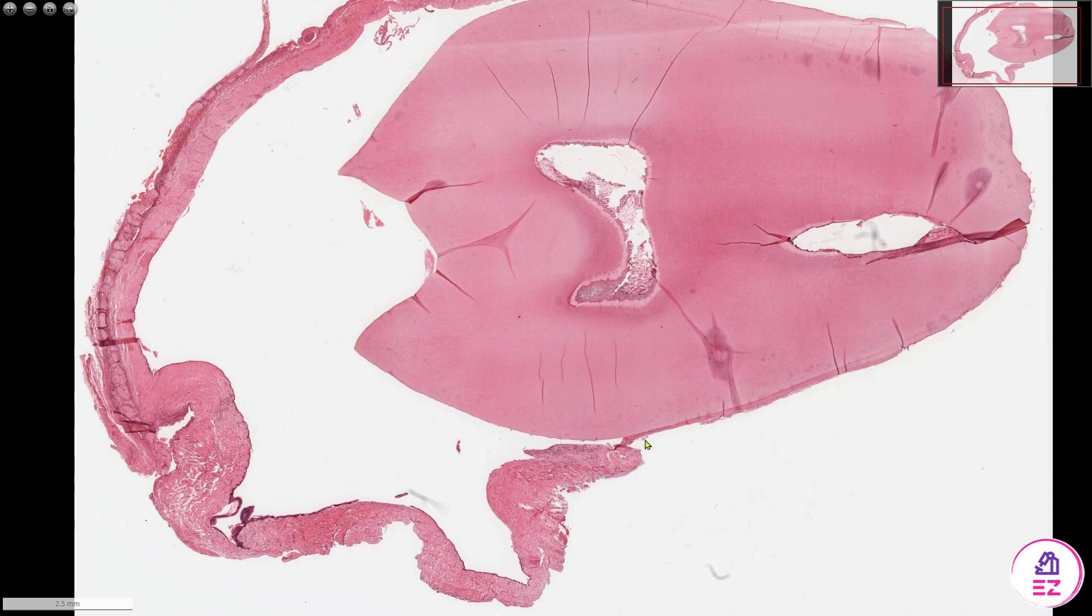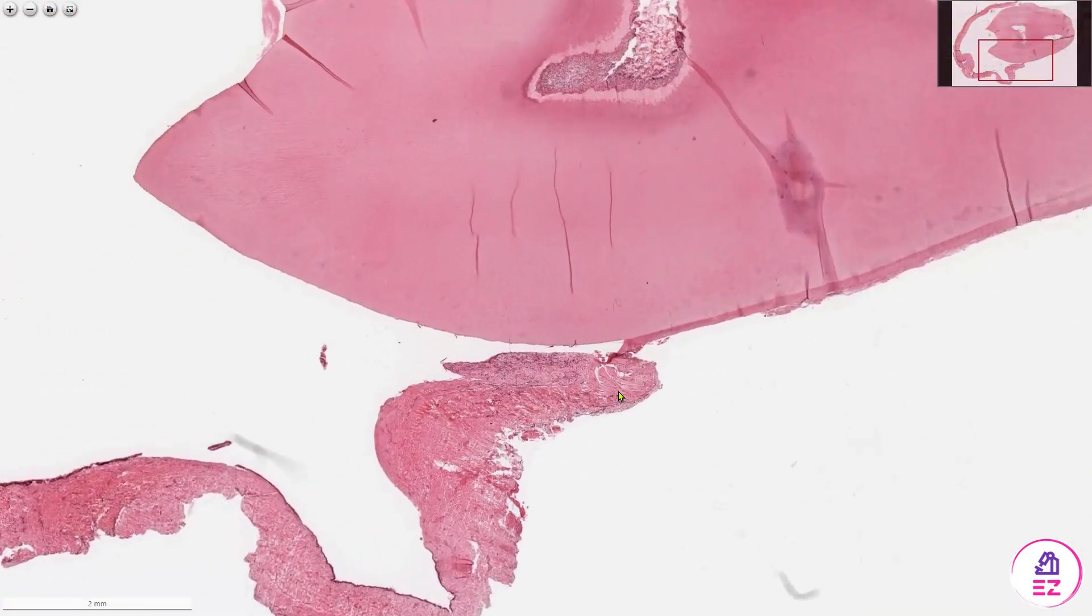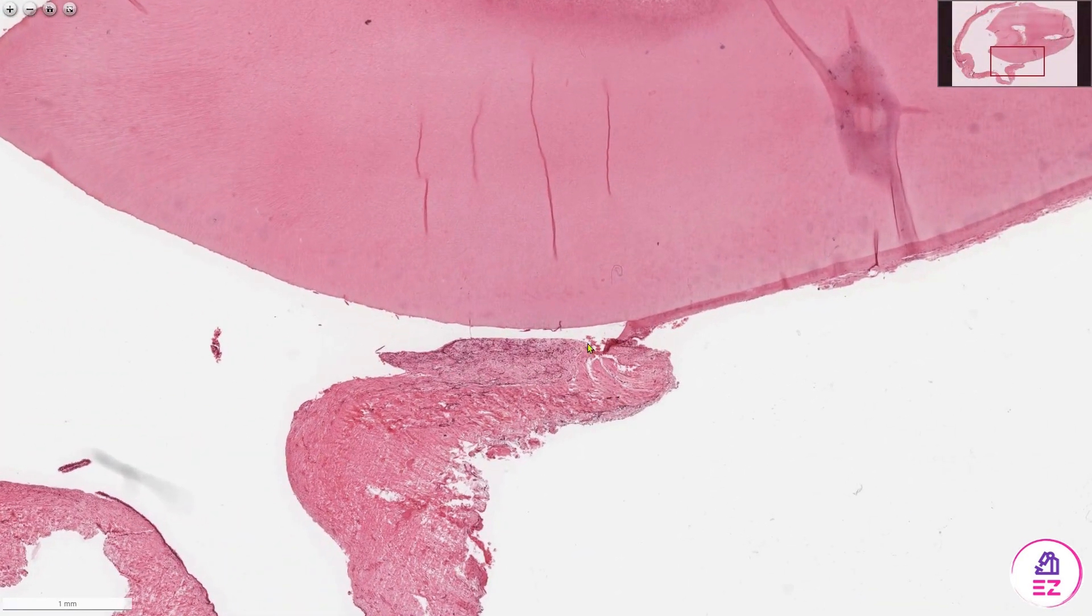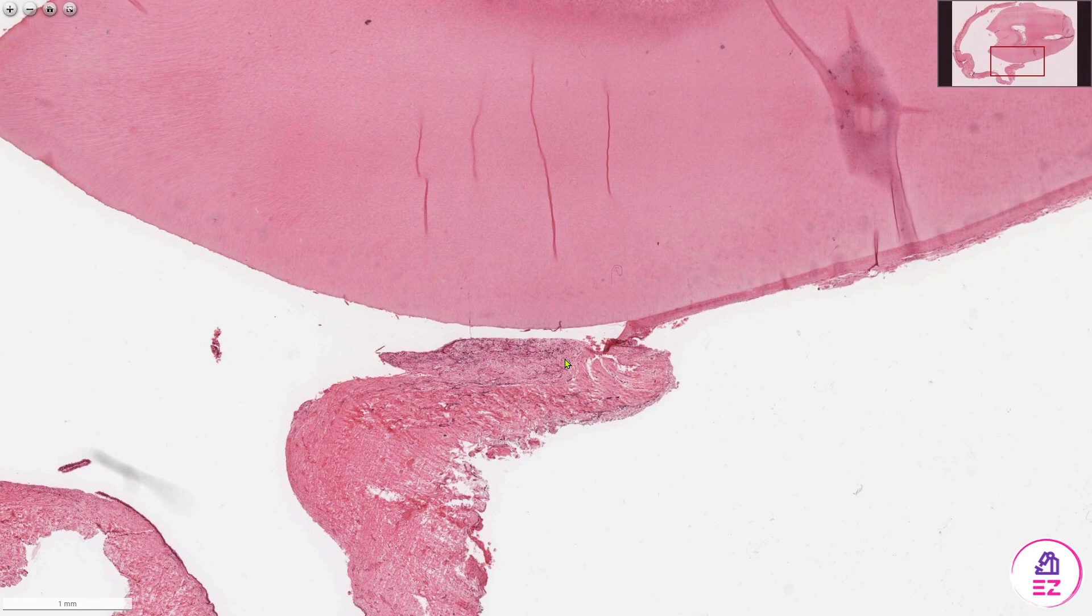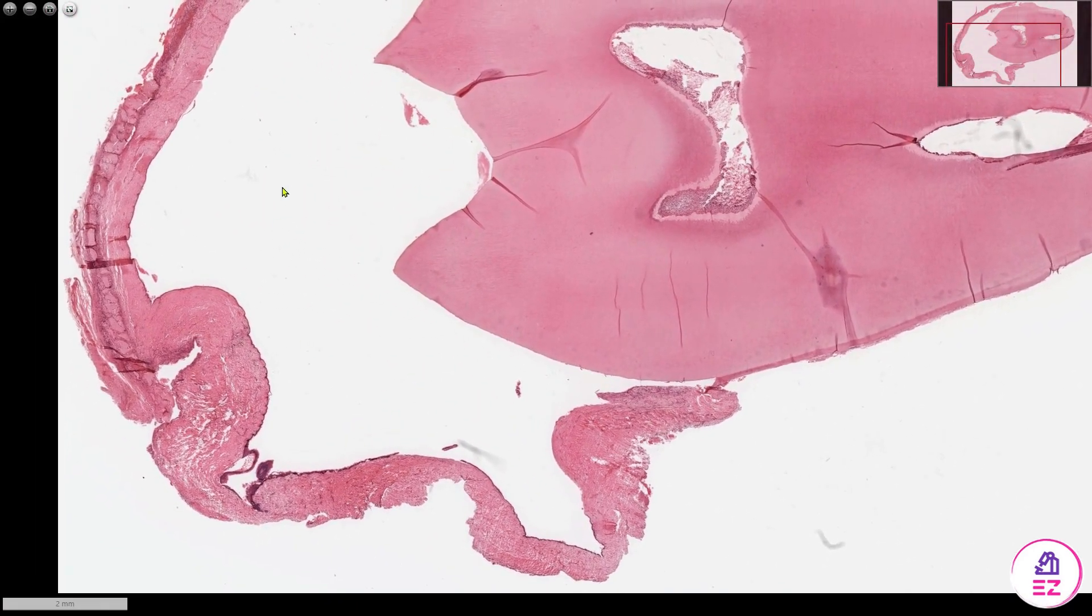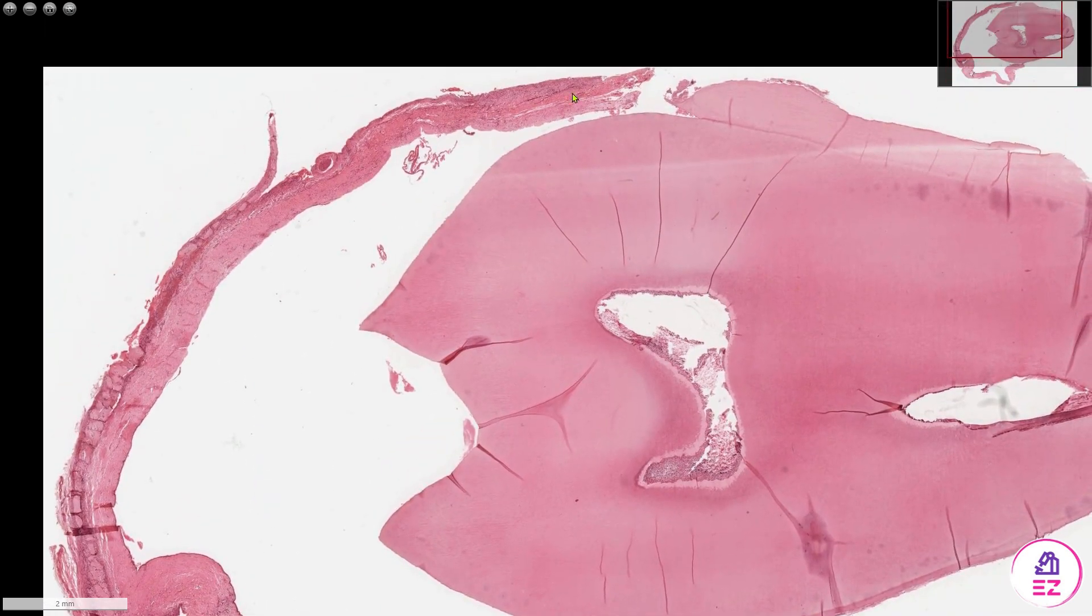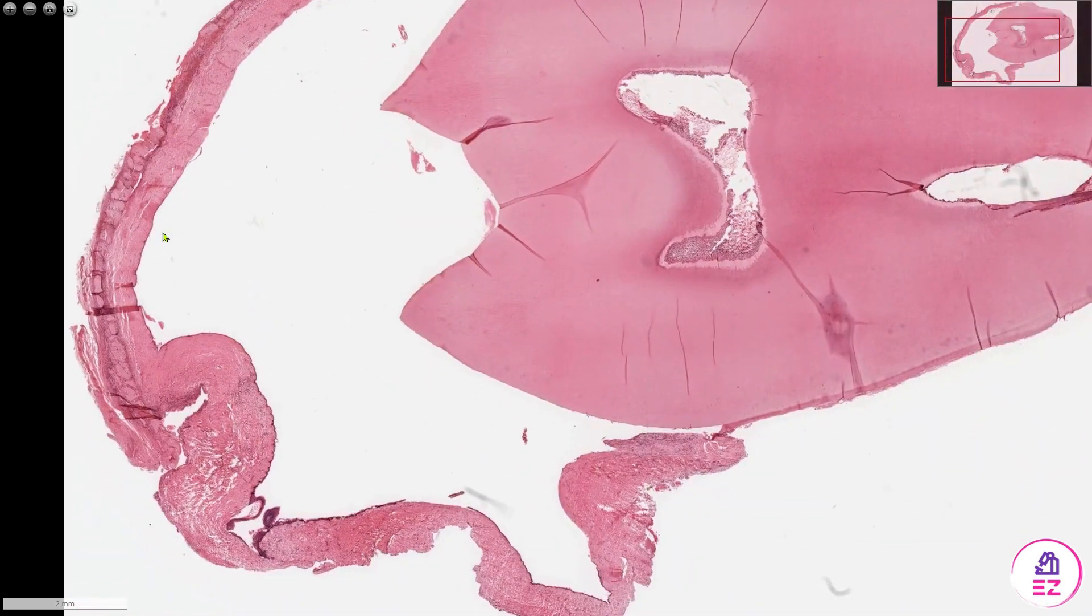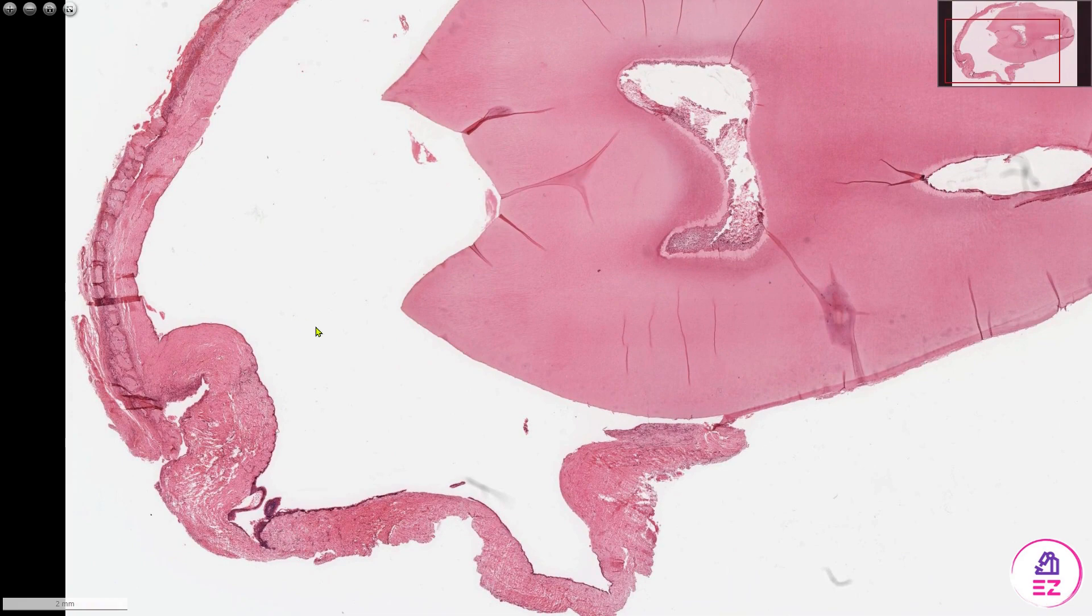So here's the cyst, and here's the tooth. Point number one is that this cyst is originating from the ACJ of this tooth and enveloping the crown, so it's a pericoronal cyst, hence why it's in keeping with a dentigerous cyst.